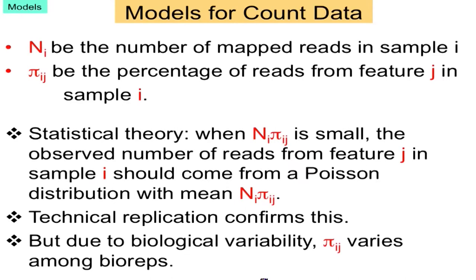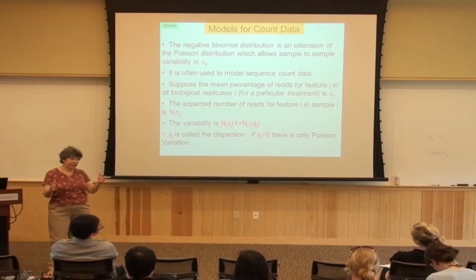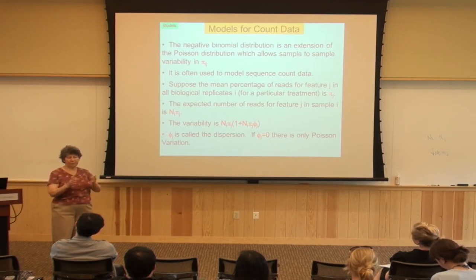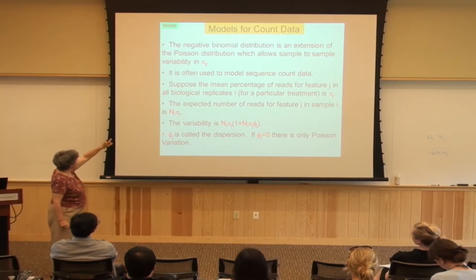In the days when we split samples across lanes, you could see that they pretty much follow the Poisson. But π_ij itself is not constant, so the negative binomial distribution is used instead of the Poisson. The naive analyses people were doing early on was to add counts across samples — that's okay for Poisson variation but not for negative binomial variation. So we're going to use the negative binomial distribution.